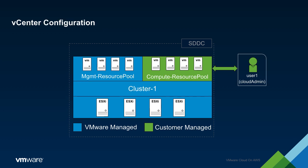The illustration shows the resource pool and cluster configuration of a standard four-node SDDC. As seen in the diagram, there are two resource pools: one which houses the infrastructure VMs, and another which contains the compute VMs which are owned by the customer. By default, vCenter is configured using a single cluster, which contains all hosts of the SDDC.